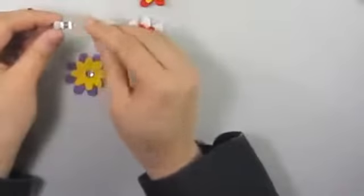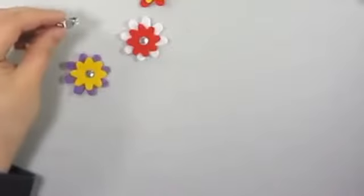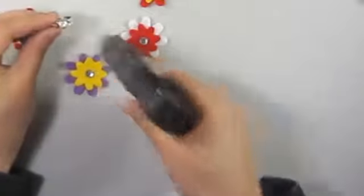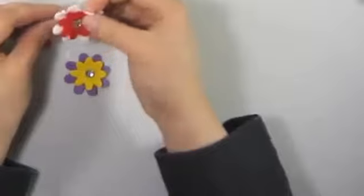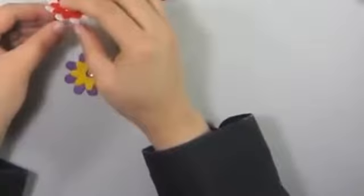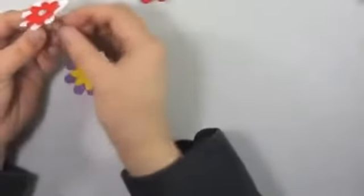Another project that you can do is taking a ring base and then attaching the flower to it. If you don't have a ring base, you can always use a piece of decorative ribbon and then attach the flower to it and that will make the ring for you.